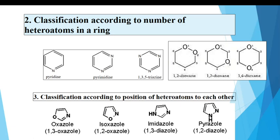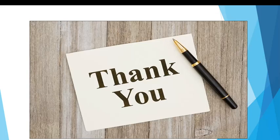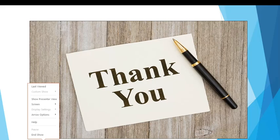The third classification is according to the position of heteroatoms relative to each other. Examples include 1,3-oxazole, 1,2-oxazole, 1,3-dioxane, and 1,2-dioxane. Thank you. The remaining part we will see in the next lecture — specifically, we will see the nomenclature of heterocyclic compounds.